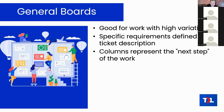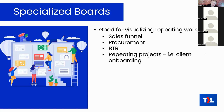Contrasting with specialized boards: specialized boards are good for anything that's repeated overall. Examples include procurement, a sales funnel, business technology reviews (BTRs or QBRs) — where you meet with a client periodically to ensure they're feeling heard, seeing the value you provide, and to discuss upcoming work. Client onboarding is another good example — when you get a new client set up on your technology stack, you probably have a specific repeating process for that.